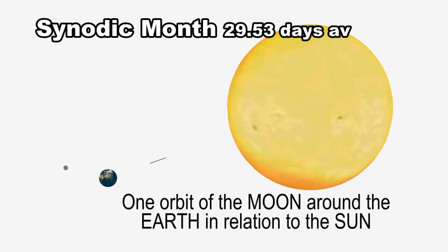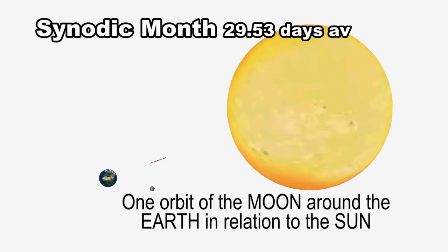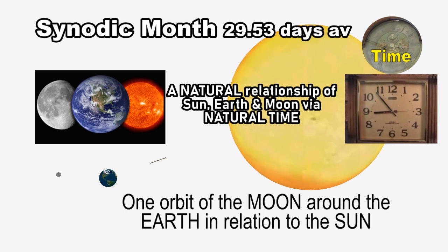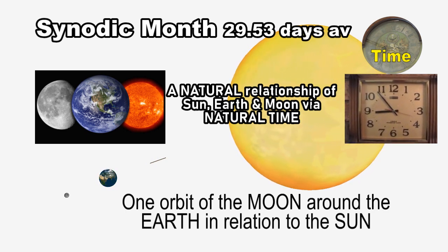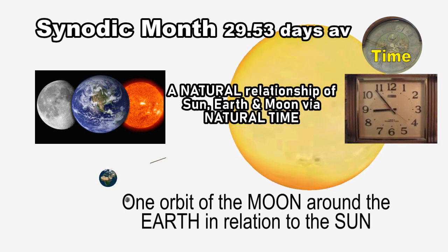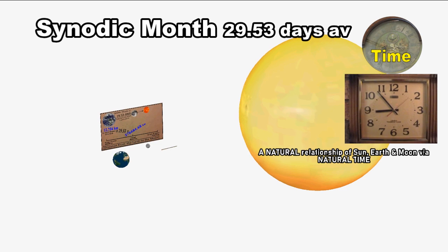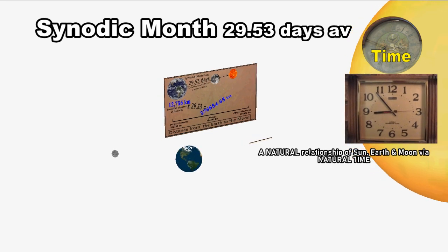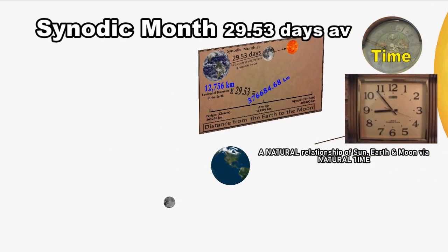The synodic month lasts 29.53 days on average — one orbit of the Moon around the Earth in relation to the Sun. The synodic month, essentially 30 days, is where we get the 30-day calendar from. Every 29.53 days on average we get a full moon. This is a natural relationship of Sun, Earth, and Moon via natural time — one orbit of the Moon around the Earth using the Sun as our fixed point.